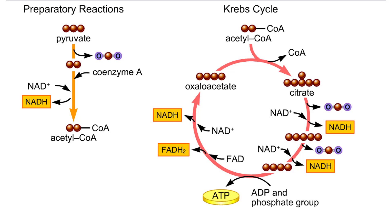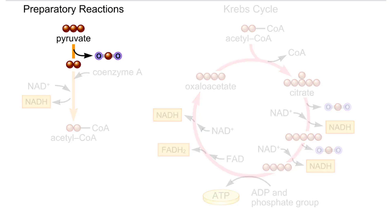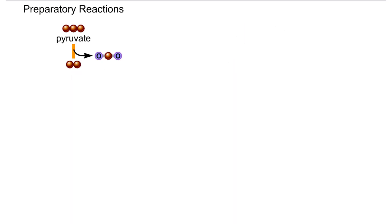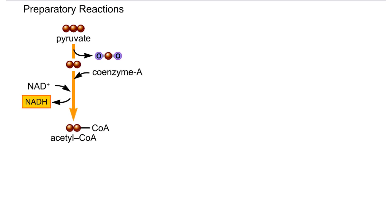Second stage reactions occur in a mitochondrion's inner compartment. In the first preparatory reaction, a carbon atom is stripped from pyruvate and released as carbon dioxide. The remaining carbons combine with coenzyme A and give up hydrogen and electrons to NAD. The product of these reactions is acetyl-CoA.